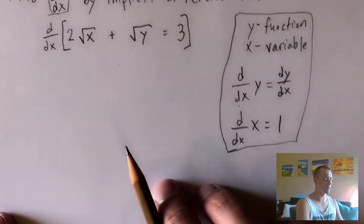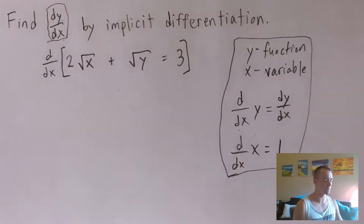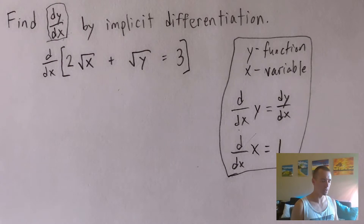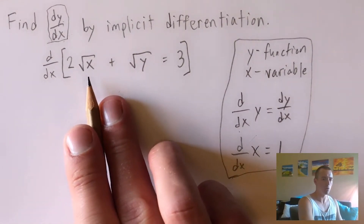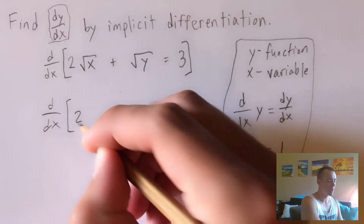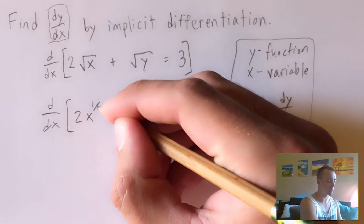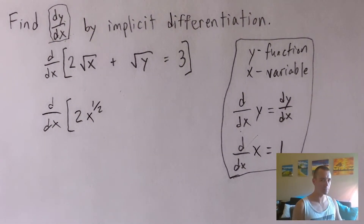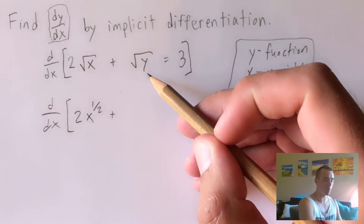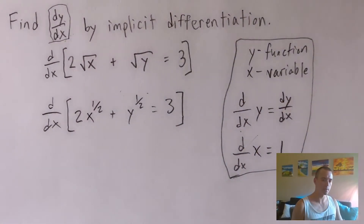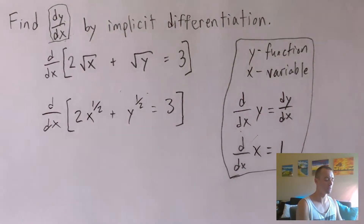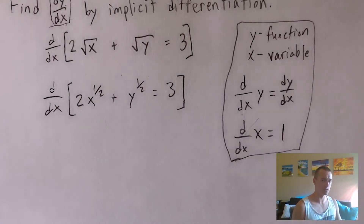Having figured this out, we can start taking the derivative of both sides of this equation. When you have square roots — or any root in general — it's easiest to first convert those roots into powers. So instead of taking the derivative of two times the square root of x, we rewrite it as two times x to the one-half power. Similarly, the square root of y becomes y to the one-half power, and that's still equal to three.